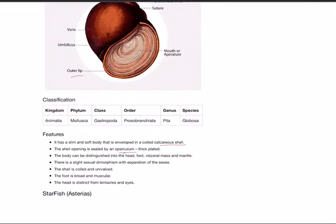If you have to see the animal, you have to break this shell. The calcareous shell itself is not the animal; inside there will be an animal. The shell opening is sealed by an operculum, a thick plated structure. The body can be distinguished into head, foot, visceral mass, and mantle. There is slight sexual dimorphism with separation of sexes. The shell is coiled and univalved. The foot is broad and muscular. The head is distinct with tentacles and eyes.